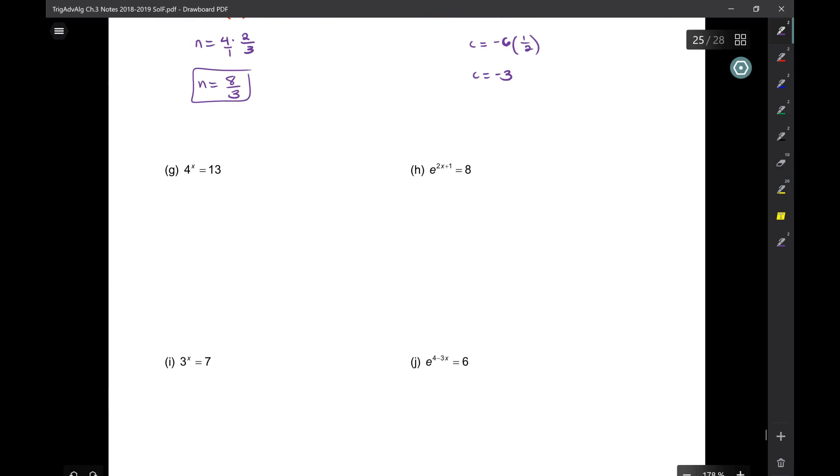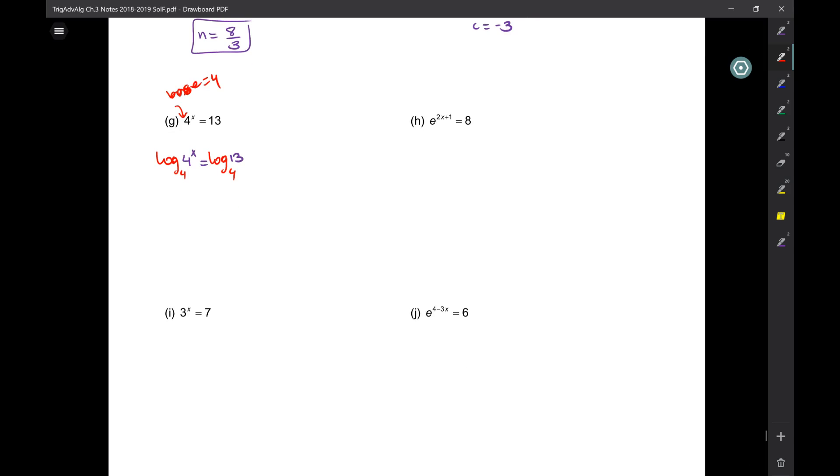I have four to the X equal to 13. Here's my power. What's the base of that power? Four. So if the problem that I'm given is four to the X equals 13, I have to take log base four of both sides. And now what happens to log base four of four to the X? It goes away. So I'm just left with X equals log base four of 13.